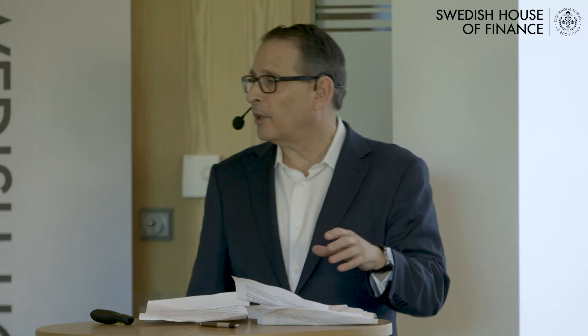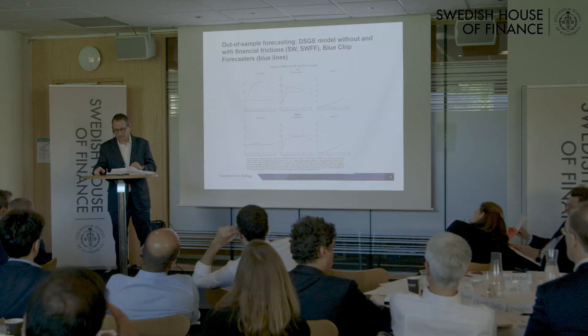This shows root mean squared errors in a Smets-Wouters model without financial frictions and in a Smets-Wouters model with financial frictions. The key point is that the financial frictions told you the recovery would be very slow because firms had to rebuild their net worth — a very different prediction than you would have gotten from a model without financial frictions.